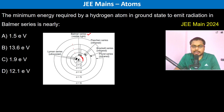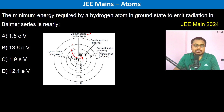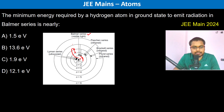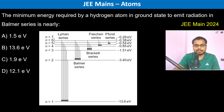A hydrogen atom in its ground state means the electron is here in the first orbit. This electron must be excited to at least the third orbit — one, two, three. So when it is excited to the third orbit, then only it can emit from three to two. The electron is actually in its ground state.